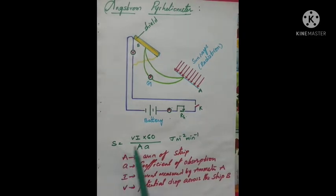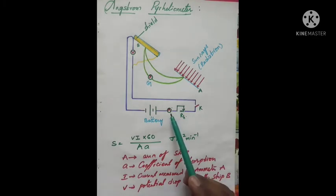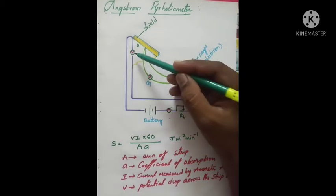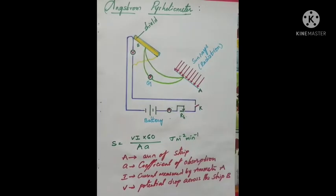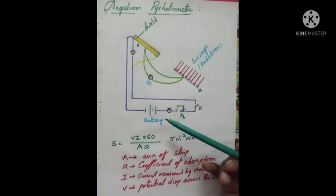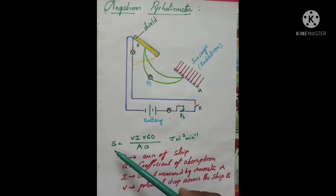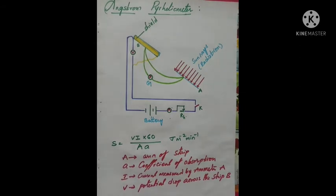The solar constant can be obtained using the formula: S = (V × I × 60) / (A × a), in joules per meter squared per minute. Here, A is the area of the strip, a is the coefficient of absorption, I is the current measured by the ammeter, and V is the potential drop across strip B. By substituting these known values, we can measure the solar constant.